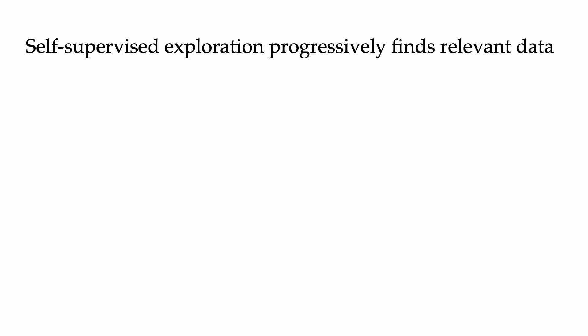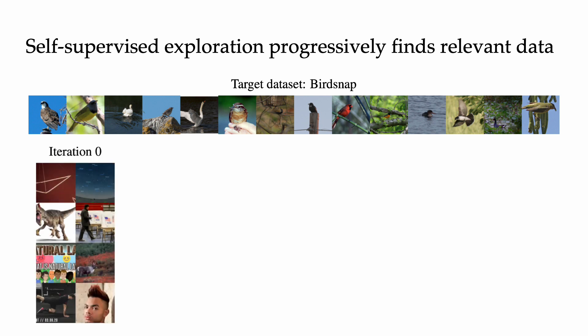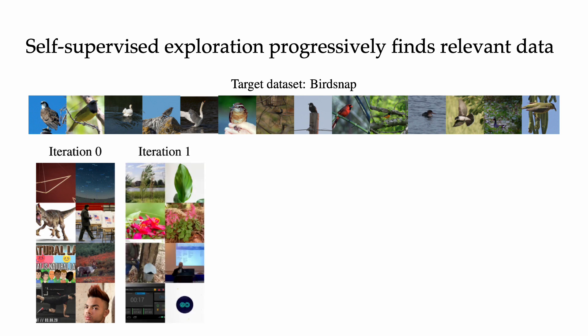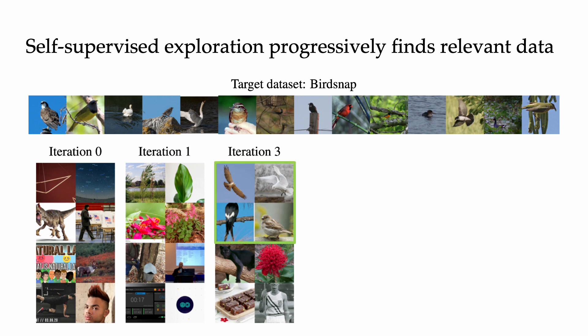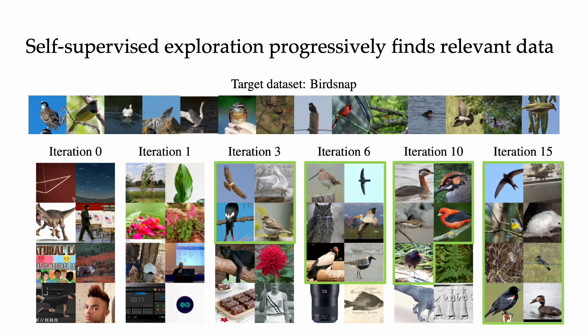Let's look at some results. We find that Internet Explorer finds relevant data purely by using self-supervised exploration. Given just the images from a target dataset like BirdSnap, in iteration 0 it must explore purely randomly, searching for a wide variety of images. By iteration 1, it starts looking for nature-oriented photos, and by iteration 3, it's already identified relevant bird data on the Internet. In iterations 6, 10, and 15, Internet Explorer narrows in on the relevant bird images, continually downloading them and using them for self-supervised training.